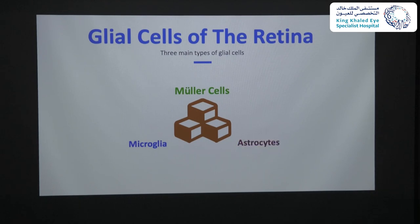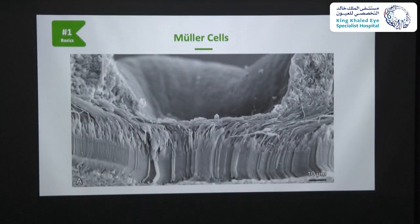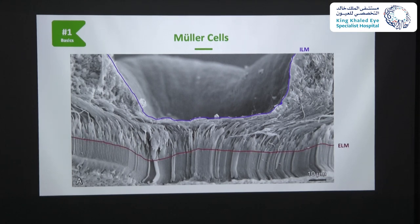Astrocytes are associated with the nerve fiber layer and blood vessels of the superficial vascular plexus. Microglia and retinal astrocytes are found throughout the central nervous system, but Müller cells are specific to the retina. Müller cells are specialized radial glial cells which span almost the entire thickness of the retina, extending from the internal limiting membrane — where it is formed by the basement membrane and the Müller cell end feet — to approximately the area of the external limiting membrane.